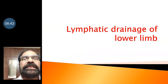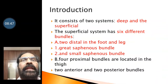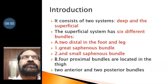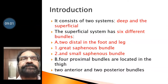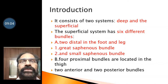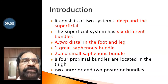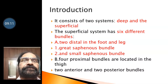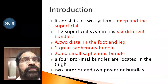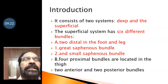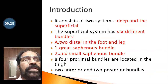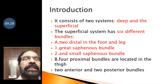Now we go to lymphatic drainage of the lower limb. This consists of two systems: deep and superficial. The superficial system consists of six different bundles. Out of those, two are distal, that is in the leg and foot, and they are the great saphenous bundle and small saphenous bundle. There are four proximal bundles located in the thigh: two in the anterior aspect and two in the posterior aspect. They are named as anterior medial, anterior lateral, posterior medial, and posterior lateral.